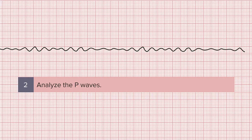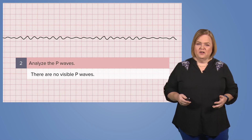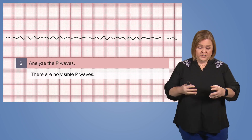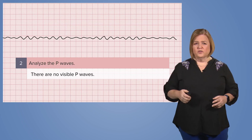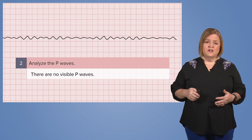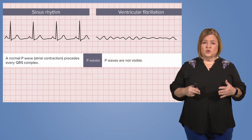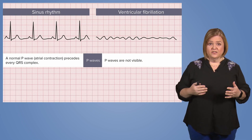Analyze the P waves. I think you already know where we're going on this one. You can't, because there aren't visible P waves on a ventricular fibrillation strip. What's going on is that the ventricle is just quivering, so no way to analyze the P waves because there are no visible P waves. So if we try to compare this strip, like we have all the others,